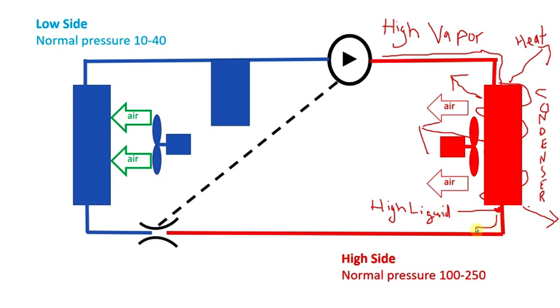Refrigerant, as a liquid now, works its way towards the orifice. Still under pressure the whole way. And right on the other side of the orifice, the pressure is going to drop. So, we come in as a high pressure liquid, into the orifice, and we come out of the orifice now as a low pressure liquid.